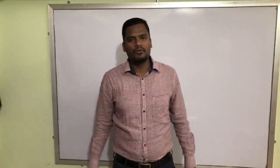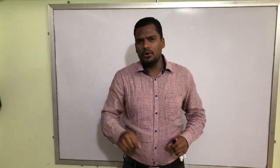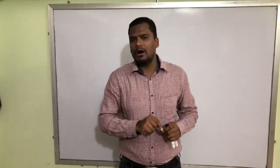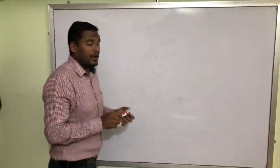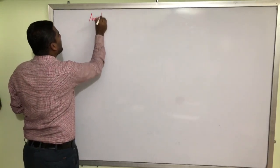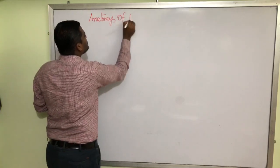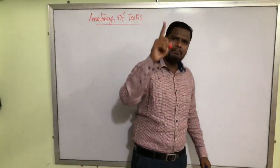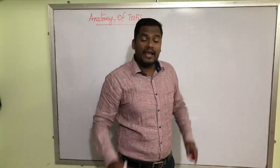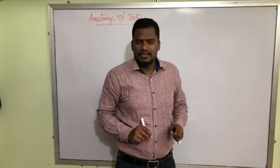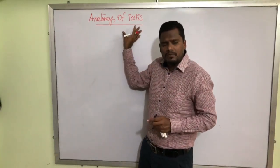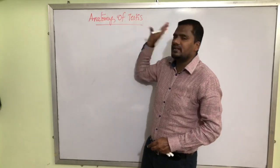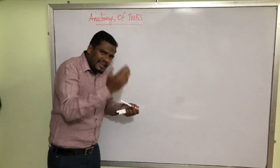Hello dear friends, welcome back again to another video from my YouTube channel. In our previous video we discussed about the location and some basic things about the testis. In this video we are going to discuss about the internal structure of the testis, that means the anatomy of the testis. Testis are the primary male sex organs in which sperm production takes place - a very important structure in the male reproductive system.